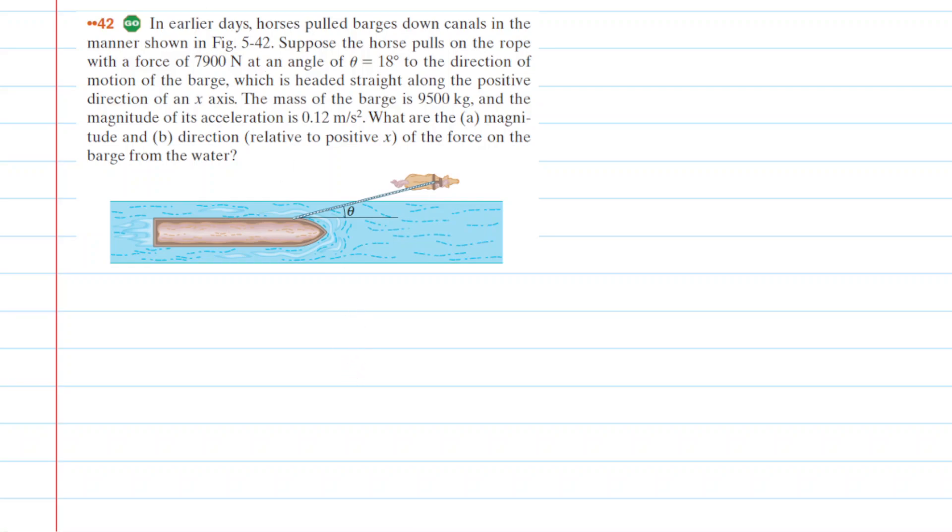The first thing that we're going to do is draw a free body diagram showing the forces that are acting on the barge. We will represent the barge as a dot, and then we have the force exerted by the rope in this direction. We know that force has a magnitude of 7,900 newtons, and this angle here was 18 degrees. Now we have two additional forces: the X component of the force exerted by the water, we're going to call that Fx, and then the Y component of the force exerted by the water, we'll call that Fy.